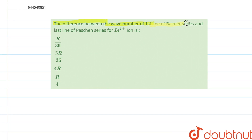Hello everyone. The question asks for the difference between the wave number of the first line of the Balmer series and the last line of the Paschen series for the Li²⁺ ion.